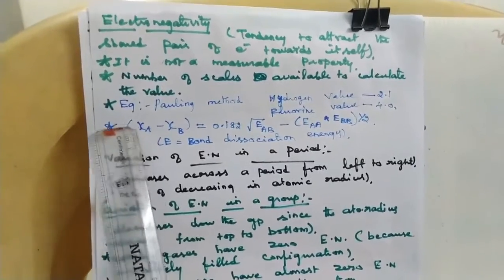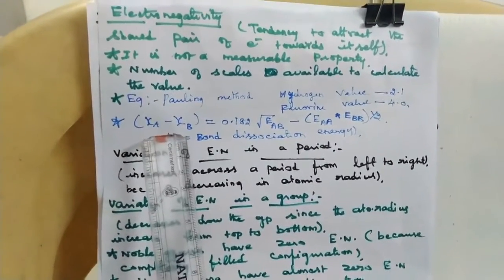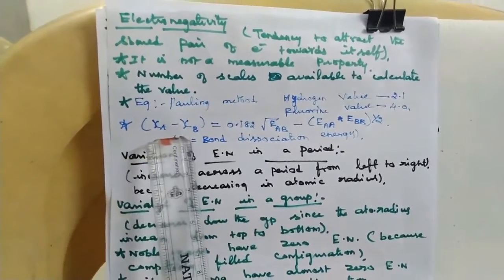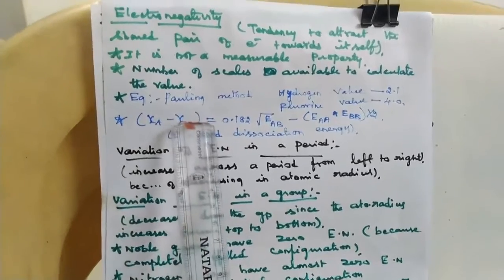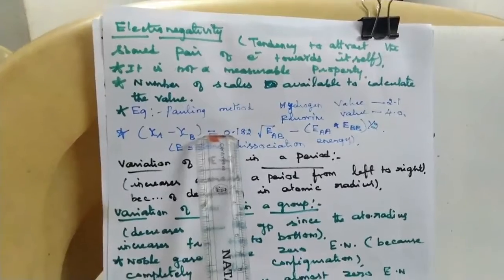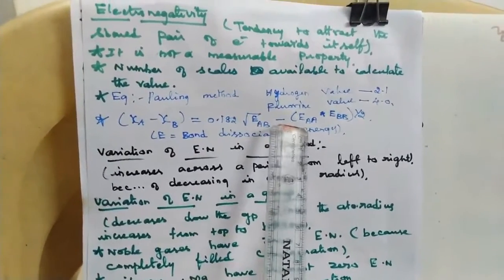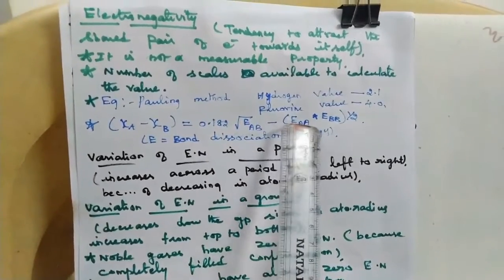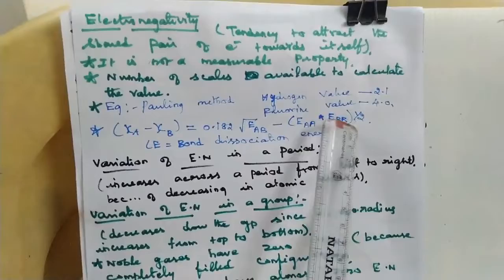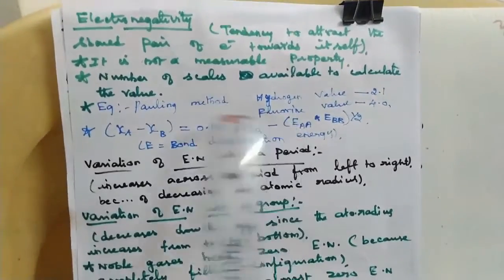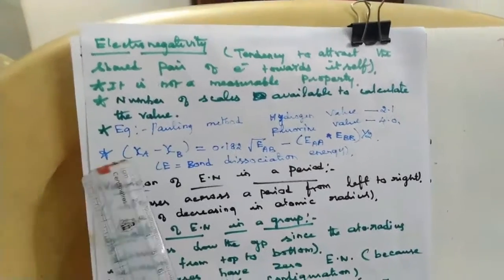The general formula to calculate electronegativity is: Chi(A) minus Chi(B) equals 0.1 times the square root of [E(AB) minus E(AA) minus E(BB)] raised to the power of 1/2. Here, E(AB), E(AA), and E(BB) are the bond dissociation energies of the AB molecule, A₂ molecule, and B₂ molecule respectively. For example, if A is sodium and B is chlorine, we apply this formula accordingly.